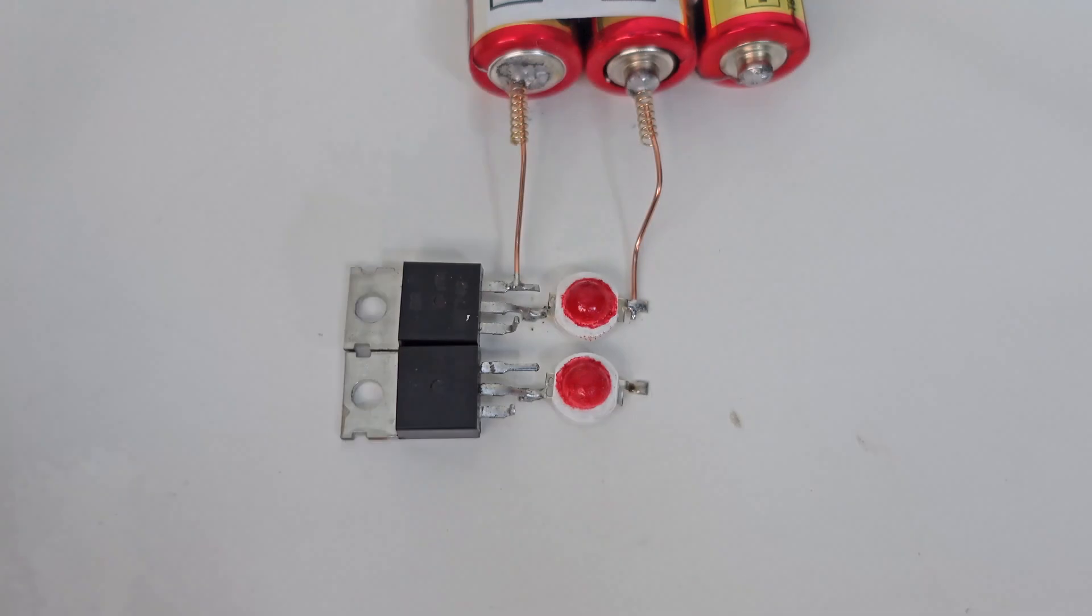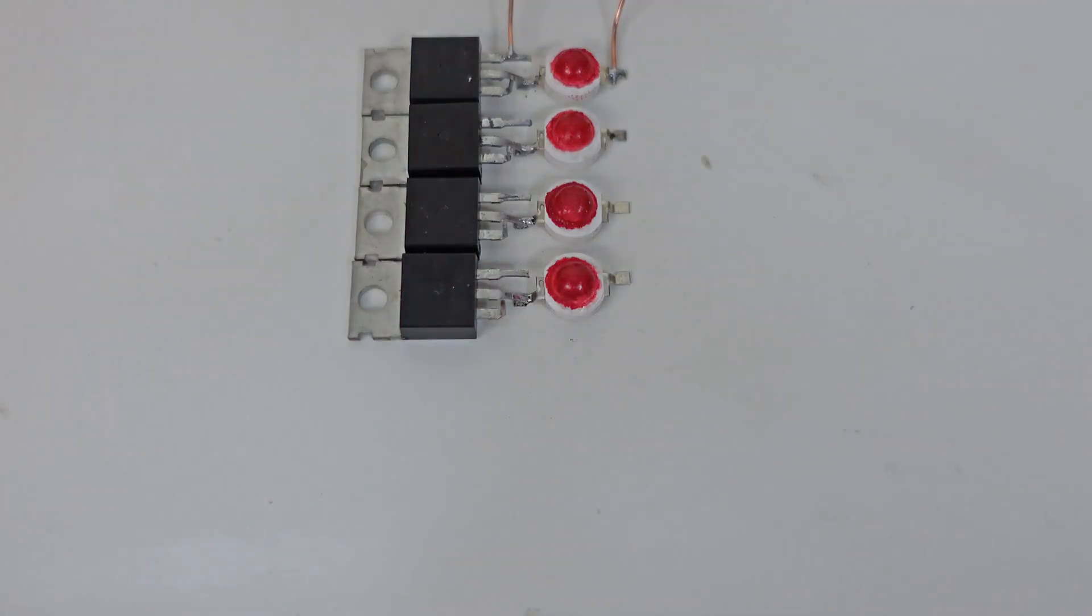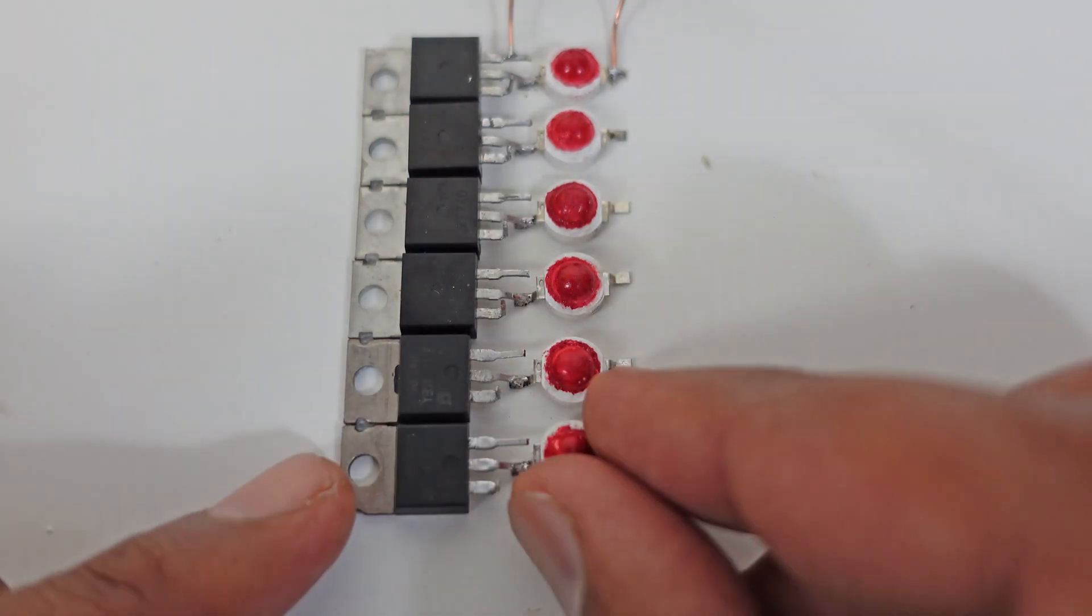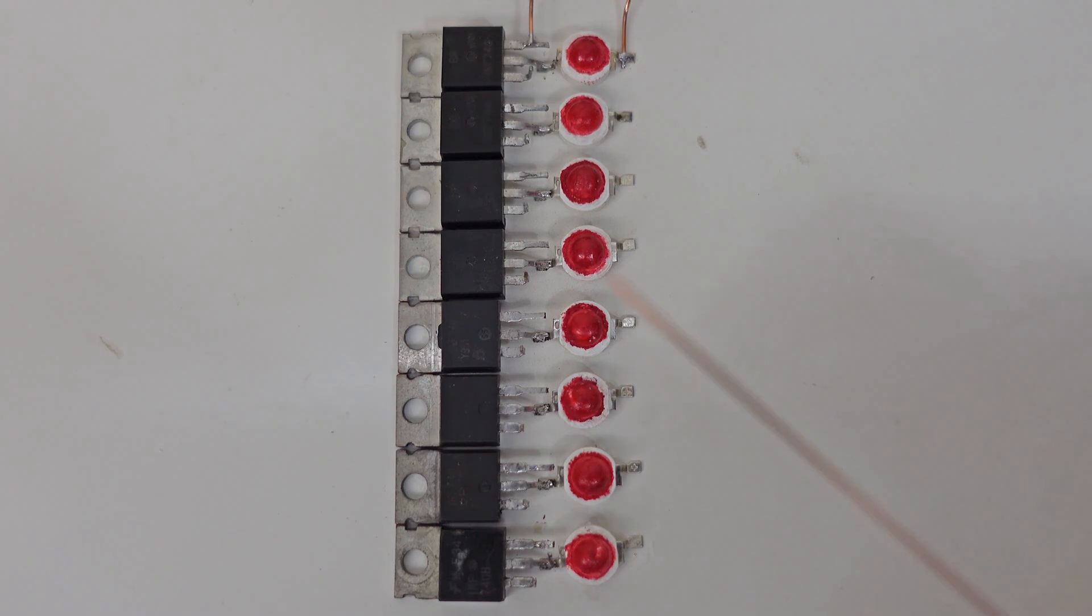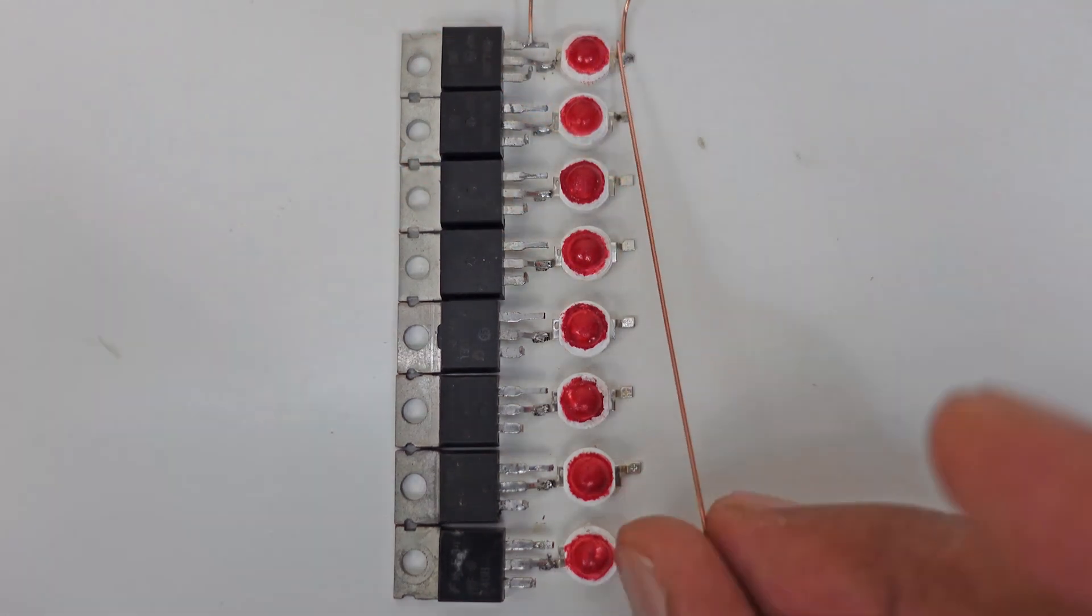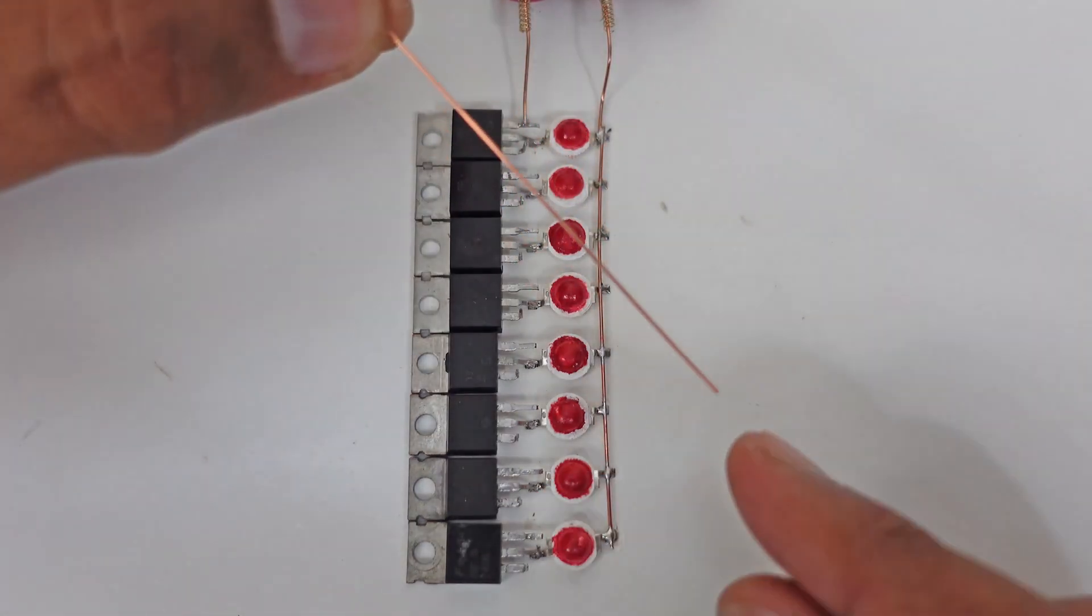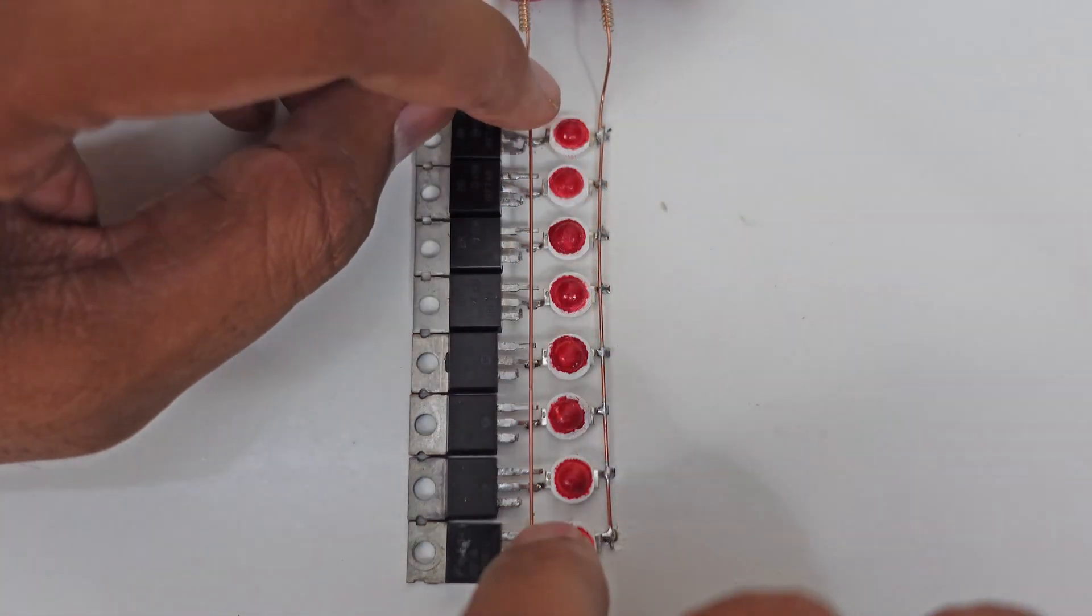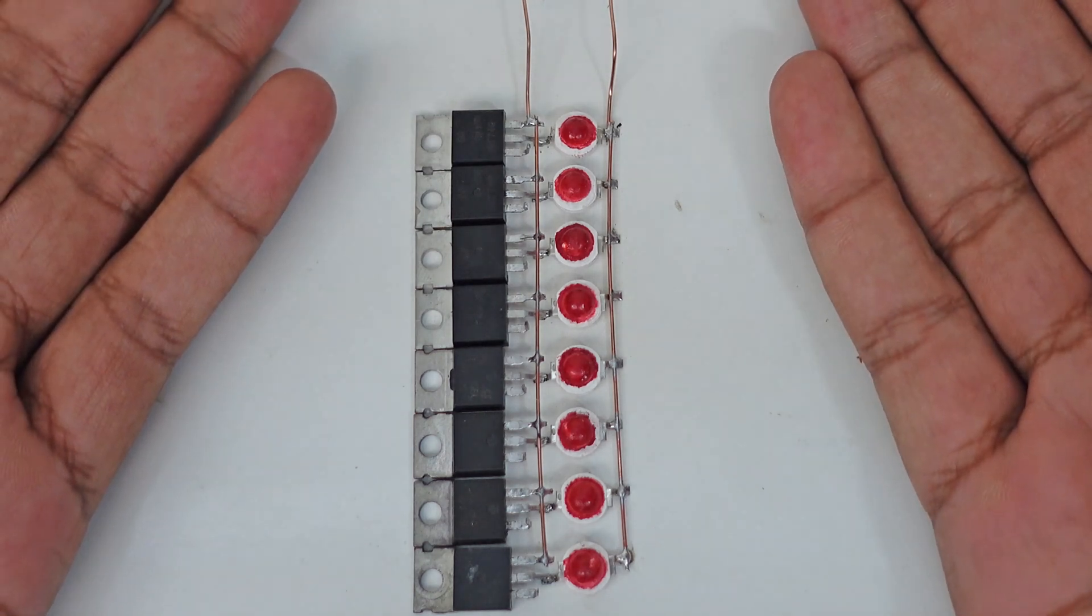Similarly we increase the number of MOSFETs to eight: three, four, five, six, seven, and eight. Eight bits equals one byte. Now we connect all the LED lights with the battery from the positive side, and connect all the MOSFETs to the battery from the negative side as well. Our one byte memory is ready to store data.